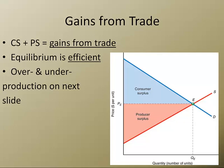Hello, class. This video is to catch you up in case you took a snow day on February 5th. We just saw the gains from trade, which is the sum of the consumer surplus and the producer surplus. What's really interesting about this market equilibrium point is that it is efficient, and by that I mean we maximize the gains from trade.